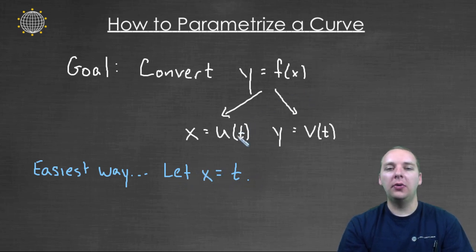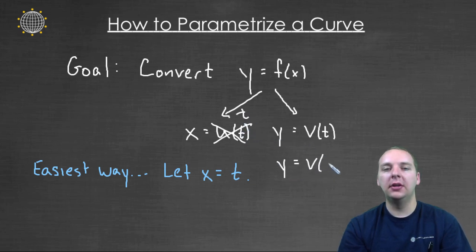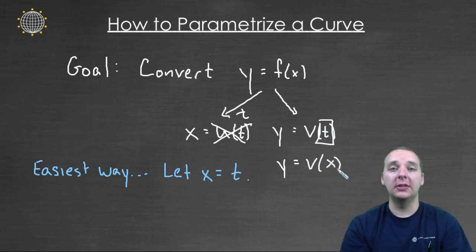then what you're basically going to do is, you know, if x is t, then your y suddenly becomes a function of t, not a function of x. Because you've taken the x out and swapped it with t and you're done.